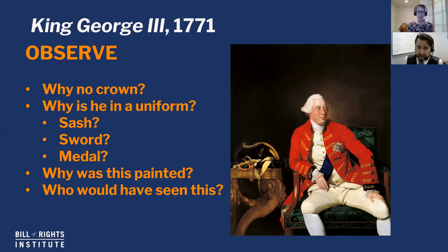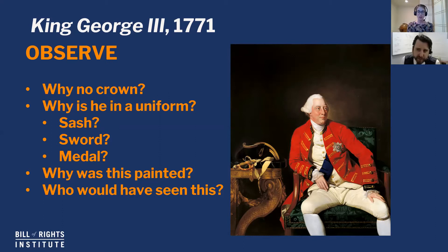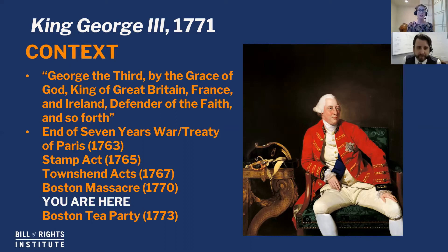Let's start with who would have seen this. This picture was seen by the public, and it was likely commissioned by the king or the queen, or both. It was actually hung in the Royal Academy. George III actually started the Royal Academy — a patronage where he gathered artists, gave them royal funds to create art, and they would display it every year for the public. The Royal Academy continues even to the present day, and to be a member is a pretty big deal.